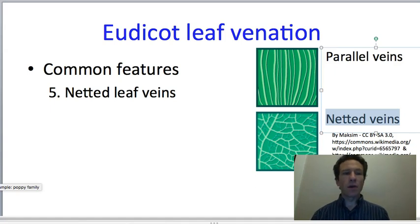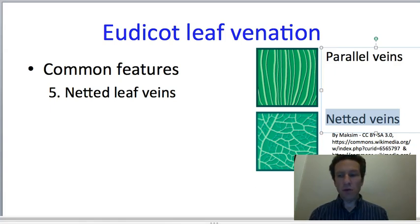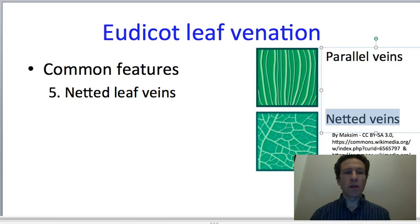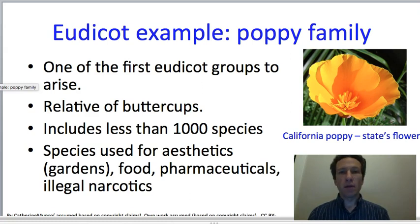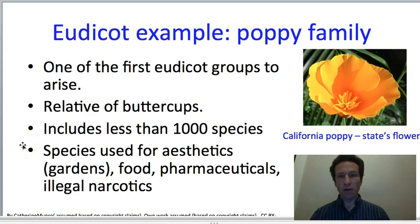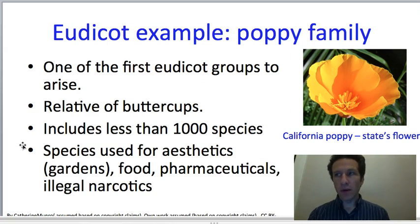We're now going to focus on just a few groups of eudicots rather than a broad general survey. The first group is the poppies, one of the first groups of eudicots to have evolved. As such, some of its traits are more similar to the basal angiosperms than to most other eudicots.